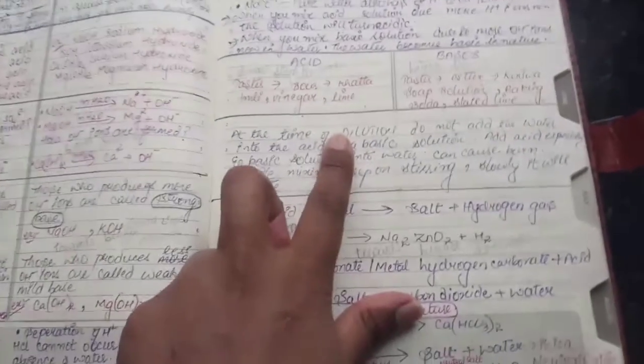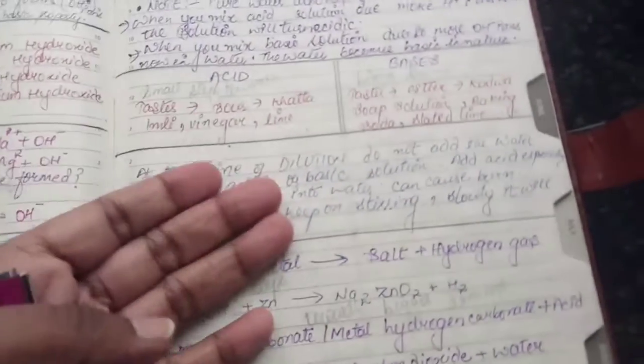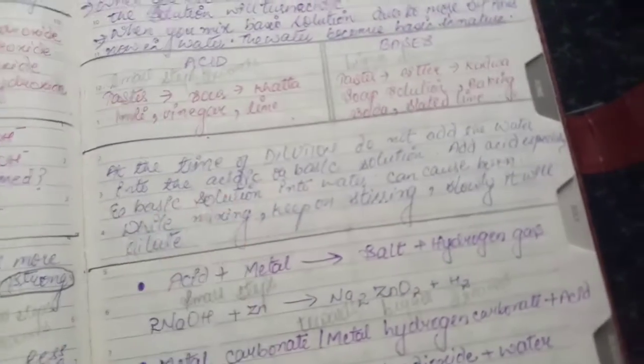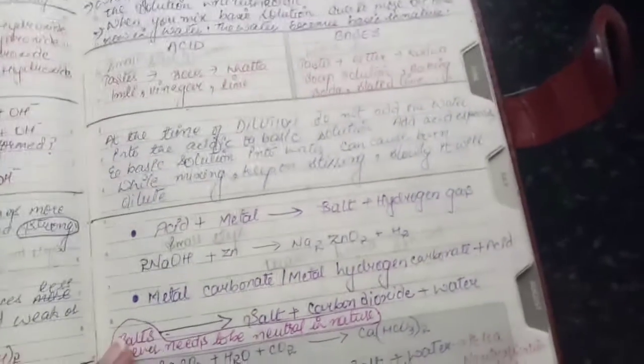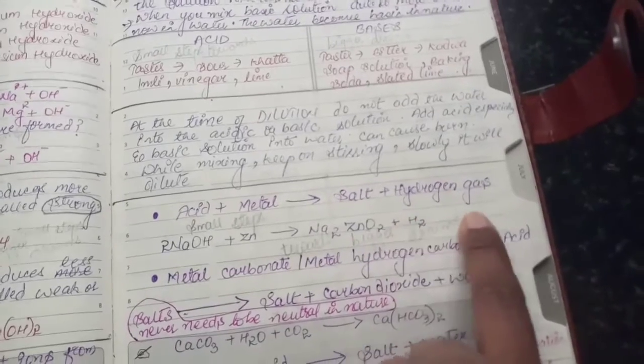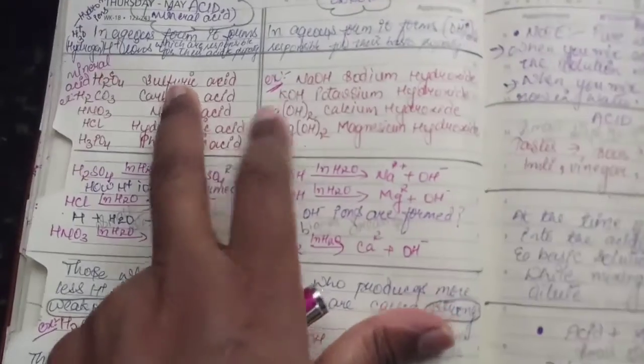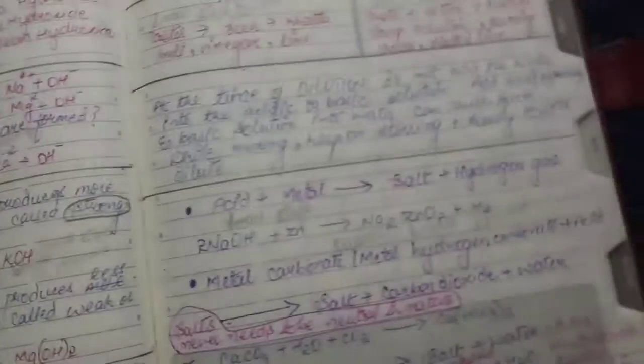That is what we have to make sure while diluting it. This question comes in SA1, we ask it mostly. The kids don't care about this, this is a very small thing, but they tend to lose their 1 mark question. Now we have seen here, acid plus metal gets us salt plus hydrogen gas. Like I have told you, you should go through it. Acid into the water, hydrogen ions are produced, and hydronium ions are produced.